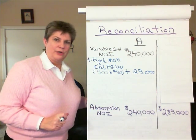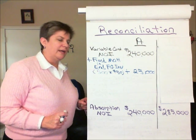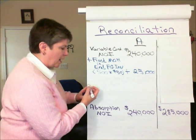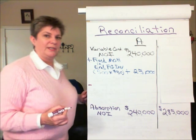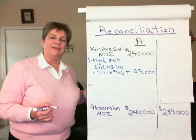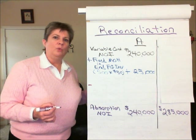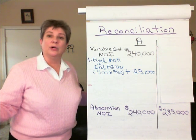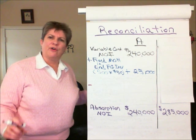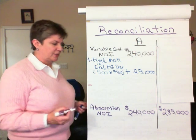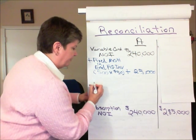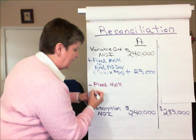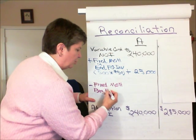We will add that $25,000 to the $240,000 variable net operating income. The next thing we want to do is subtract out from variable costing net income any fixed overhead that was in beginning inventory, which would be released into cost of goods sold in the current period under absorption costing. We're following a first-in, first-out cost flow assumption.